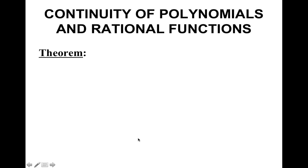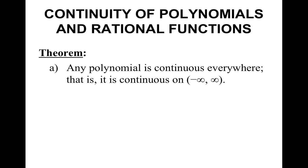Continuity of polynomials and rational functions. Part A of this theorem is that any polynomial is continuous everywhere — that is, it is continuous on negative infinity to infinity. So if you think of any polynomial: any quadratic, linear, cubic, etc., you should picture a curve with no discontinuities in it. Hence, it is continuous everywhere.